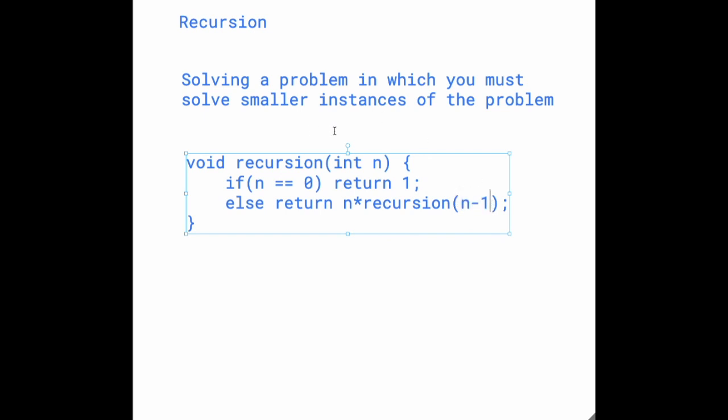And so we can just keep simulating this. n minus 1 would be 3, and then that's not equal to 0, so it goes through this else statement. And then we're returning 3 times recursion of 3 minus 1, which is 2. And so we keep doing that until we get 0. And then we get return 1.